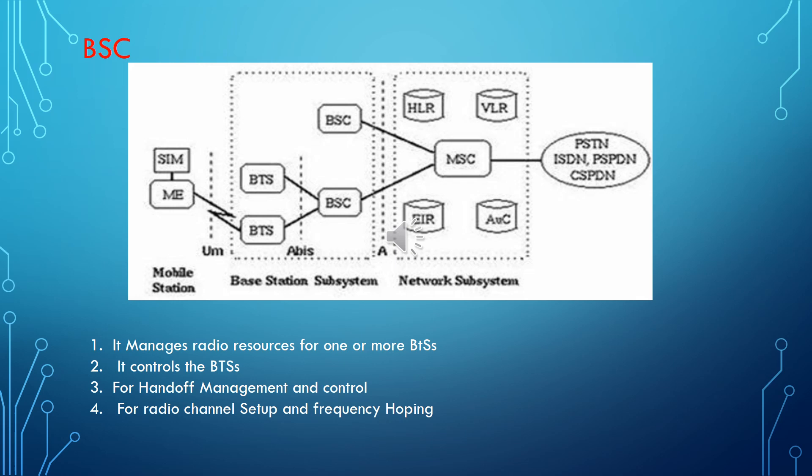Let's have a quick look at the base station controller, the BSC. In the diagram, on your left side we have the mobile station, which is made up of the SIM card and the mobile or terminal equipment. From the mobile station to the BTS you have the Um interface, and then from the BTS it connects to the BSC via the Abis interface. Our focus is on the BSC and the BTS. The function of the BSC is that it manages the radio resources for one or more BTSs.